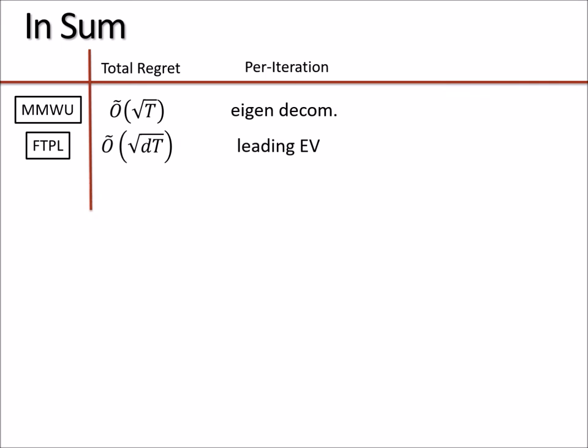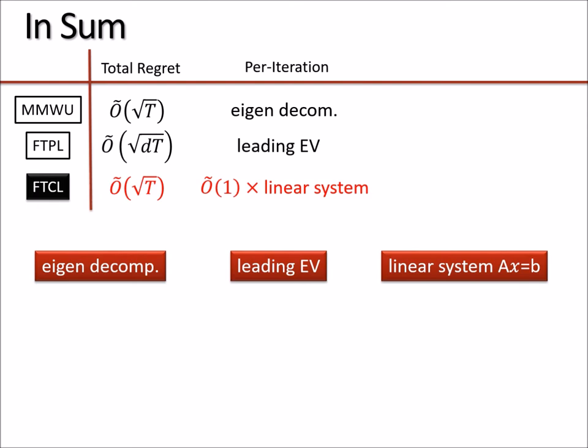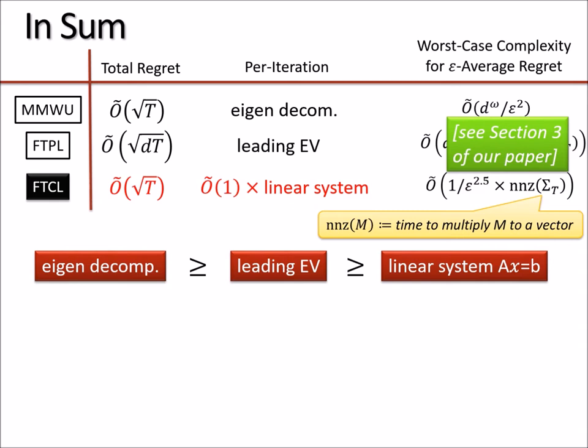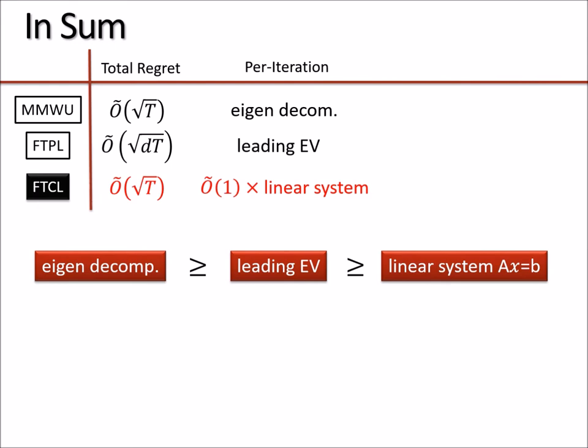The main focus of this talk is to present a new strategy that we call follow the compressed leader, in which we, up to log factors, match the optimal regret of matrix multiplicative weight update. But at the same time, in each iteration, our new strategy requires only logarithmic number of computations of solving linear systems. If you think about it, although in practice it depends on actual implementations, in general, in most cases, computing the full eigendecomposition should be slower than computing the leading eigenvector of a matrix, which in turn is no faster than computing the solution of a linear system. So for this talk, I plan to introduce what this strategy is and then briefly describe why it achieves optimal regret.